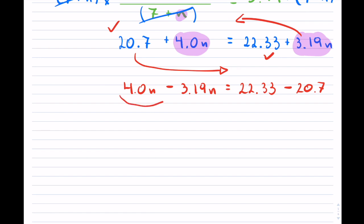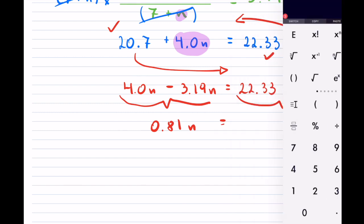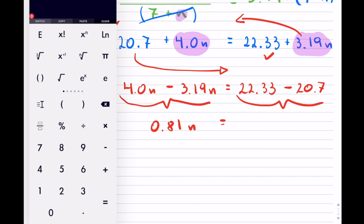So now let me collect these like terms and get the answer right there. So I have 4 minus 3.19n equals, and then I have on the right hand side, 22.33 minus 20.7, that is 1.63.